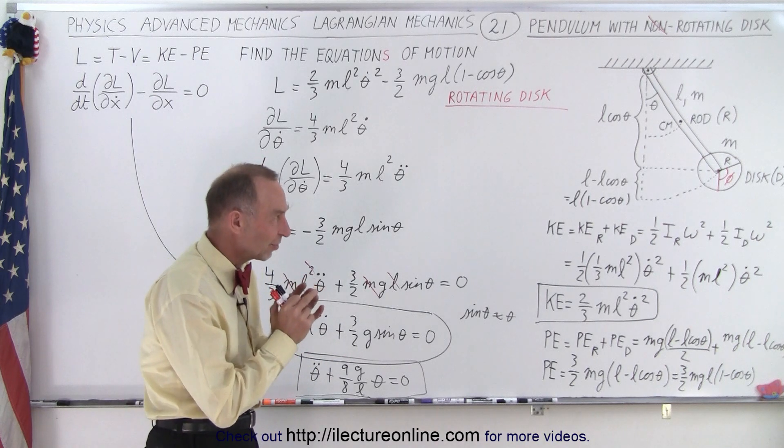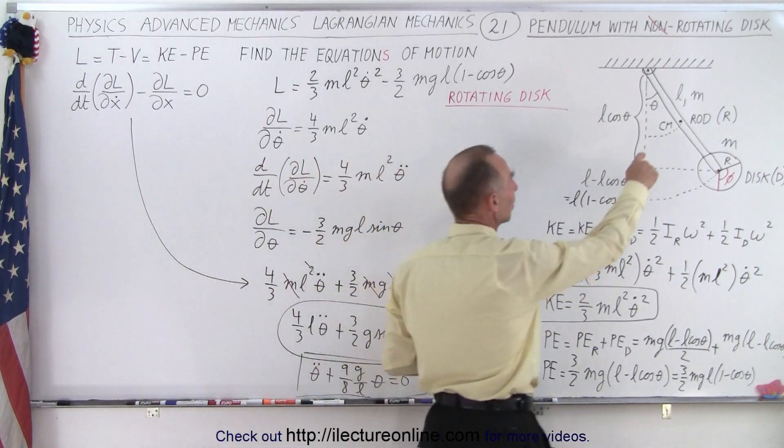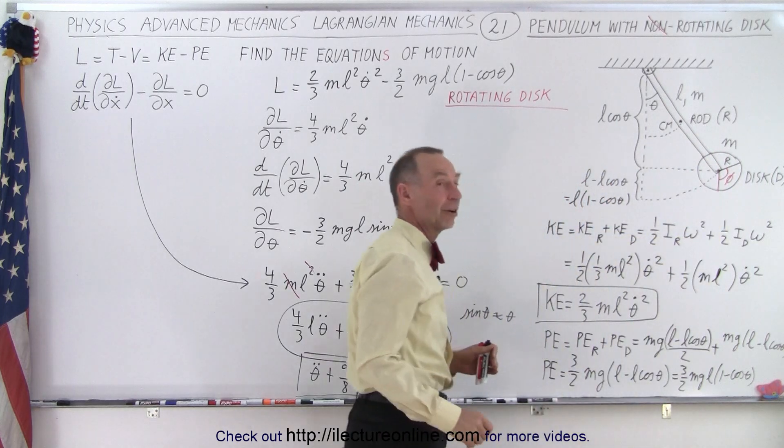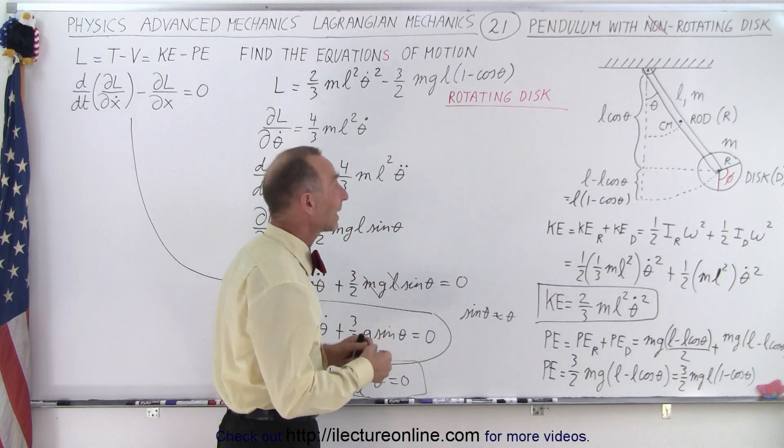And again, we're able to separate those because one is dependent on the variable theta, and the other one is dependent on the variable phi. So again, we need to find the kinetic energy.